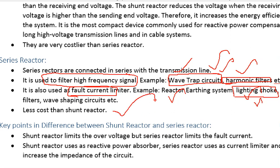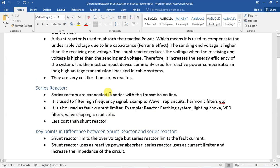There are two main causes. If there is reactive power compensation, that is the shunt reactor. For normal applications such as harmonic filter, wave trap circuits, and series reactor applications, and to limit the current — either fault current or load current — that is the series reactor. So the shunt reactor has its cause and the series reactor has its cause. We will see you in the next video, thank you so much for watching. If you like this video, please give us a comment.